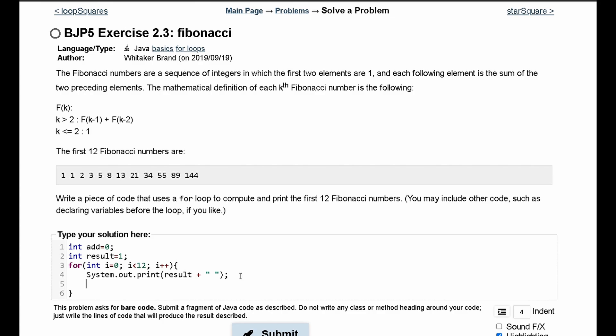Since we know that a Fibonacci sequence adds the first two numbers or it adds two numbers to get the next number, we need to find a way to add these two numbers and store it into a value. So we'll say int temp and we're going to set that equal to the addition of these two values. The two values that we have are add and result.